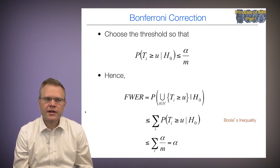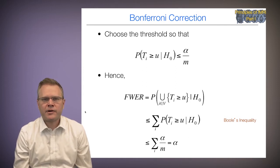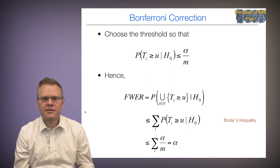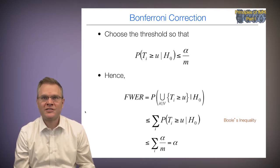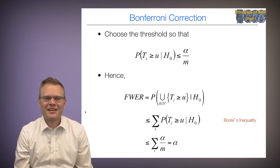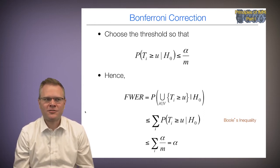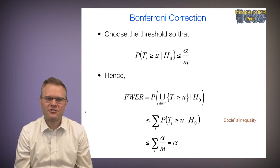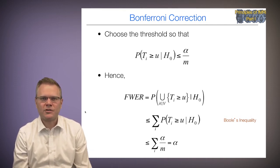So the Bonferroni correction controls the family-wise error rate at alpha. For example, if we have 10 tests and want to control the family-wise error rate at 0.05, we should choose u so that each test is controlled at 0.005. If we have 100,000 tests, we divide by 100,000. The threshold becomes increasingly stringent as we do more and more tests.